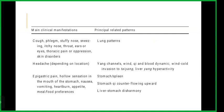If there is a headache, depending on the location, it could be yang channels, wind, qi and blood dynamic, wind-cold invasions to Tai Yang, or liver yang hyperactivity. There is also epigastric pain, hollow sensation in the mouth of the stomach, nausea, vomiting, heartburn, appetite or meal food preferences — these could be stomach or spleen patterns, stomach qi counterflowing upward, or liver-stomach disharmony.